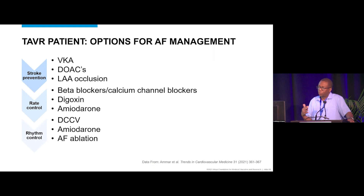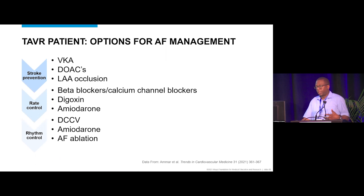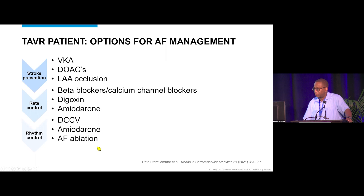Outcomes are worse in those with new-onset AFib than those with established AFib, probably because it is harder to initiate and maintain therapies in high-risk patients post-TAVR. Management challenges include stroke prevention, rate control, rhythm control, risk of needing a pacemaker, and the difficulty of deciding when to start DOACs or vitamin K antagonists after a bleeding event.